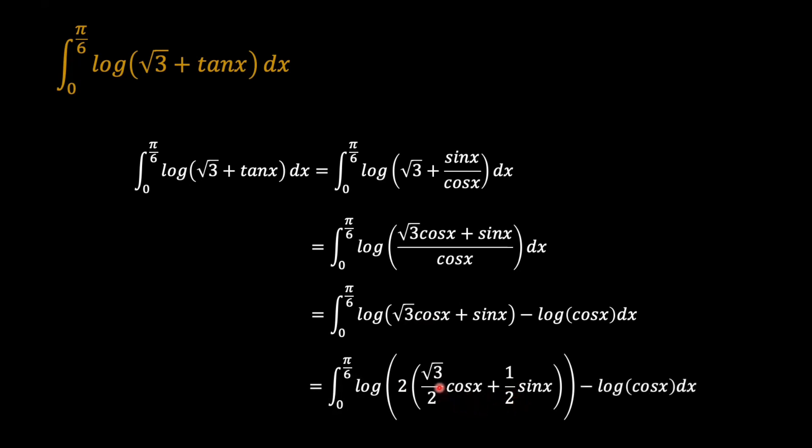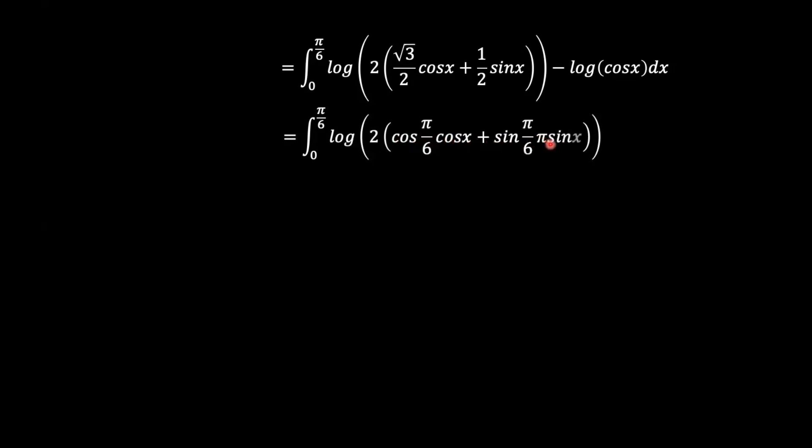So as you can see, root 3 over 2 is the same as cosine of pi over 6, and half is the same as sine of pi over 6. So what we can do now is express that as 2 times cosine pi over 6 cosine x plus sine pi over 6 sine x.